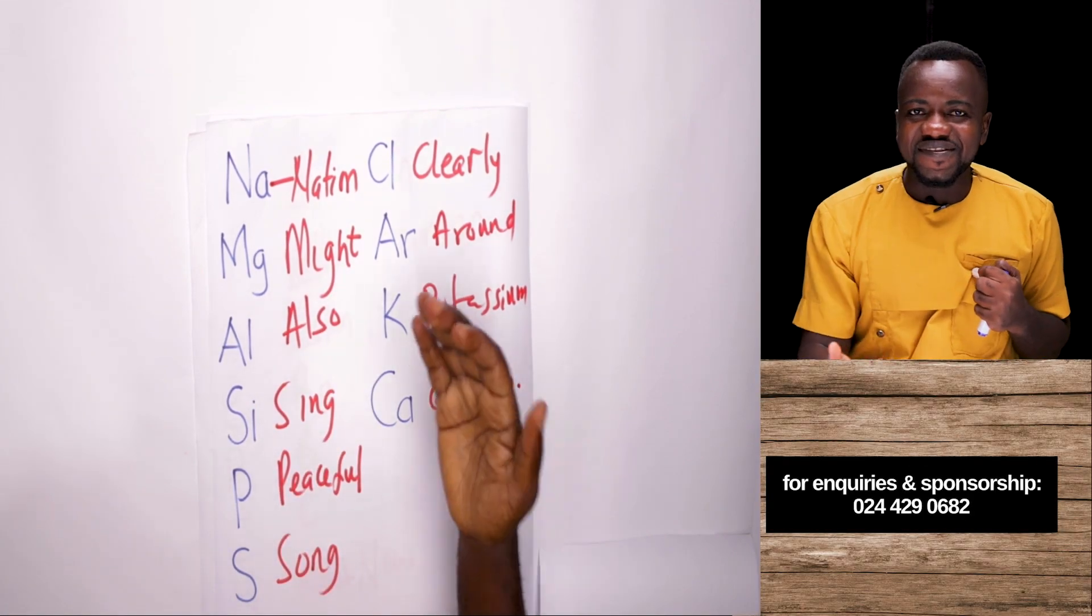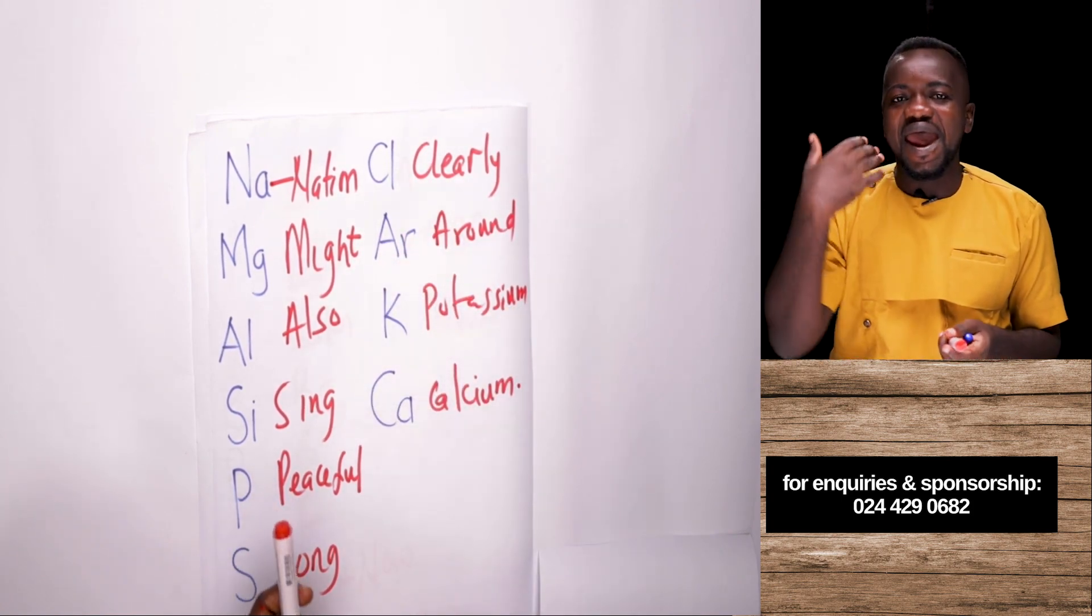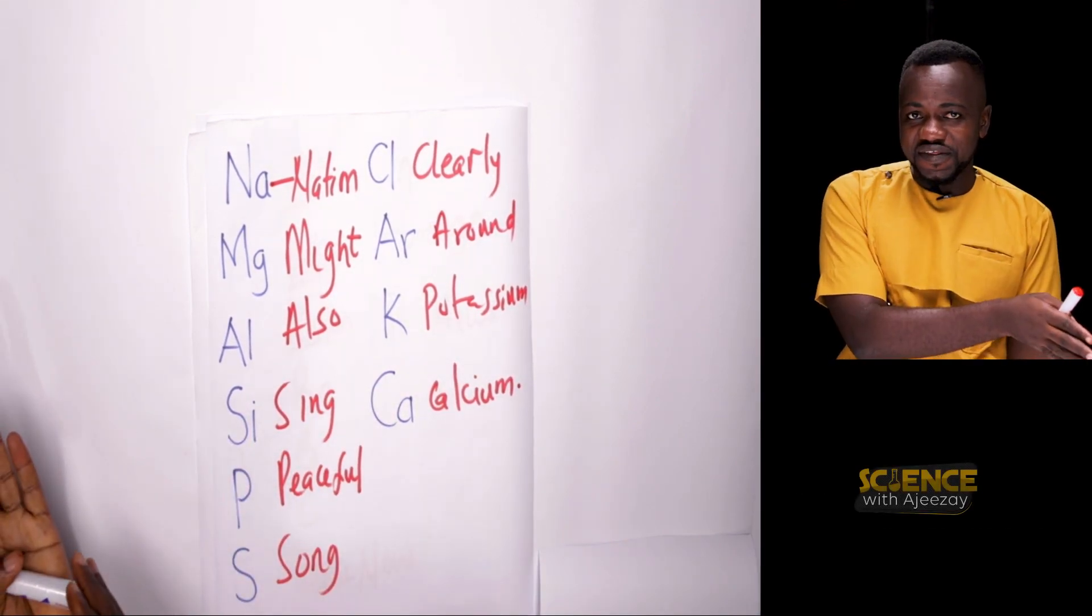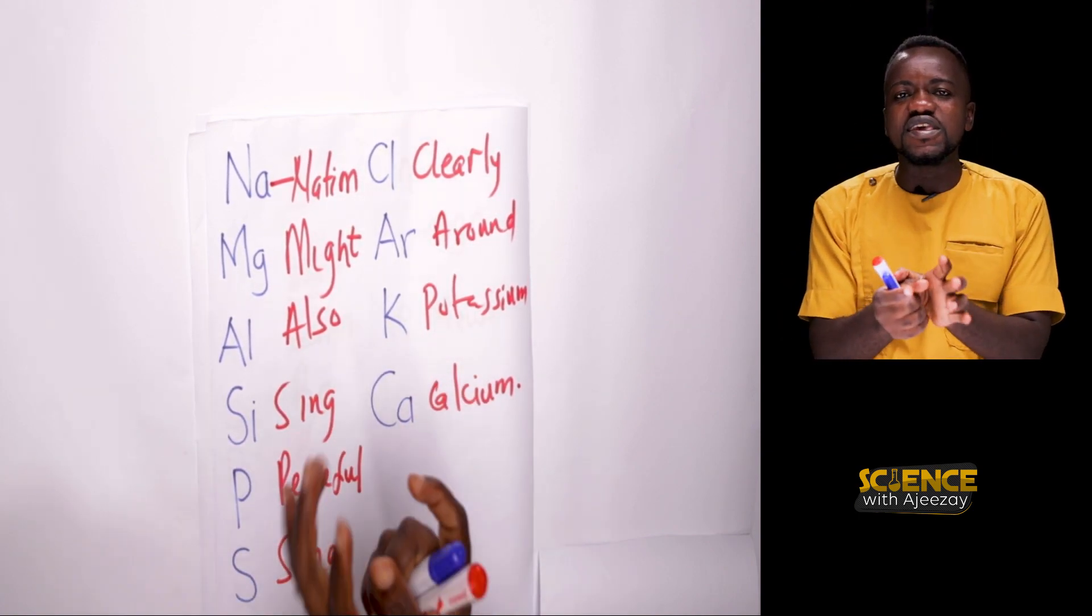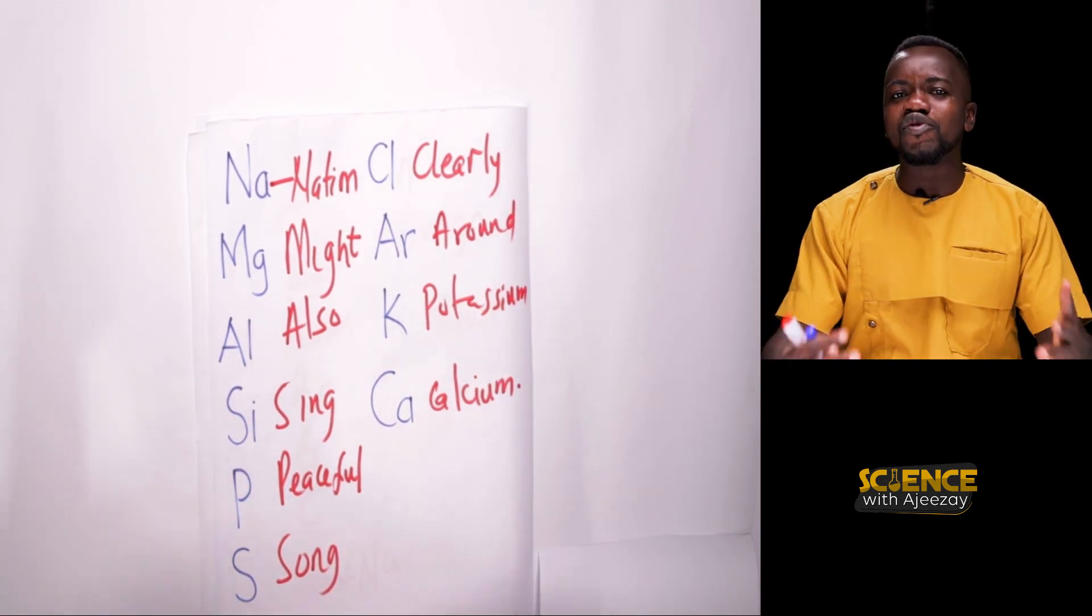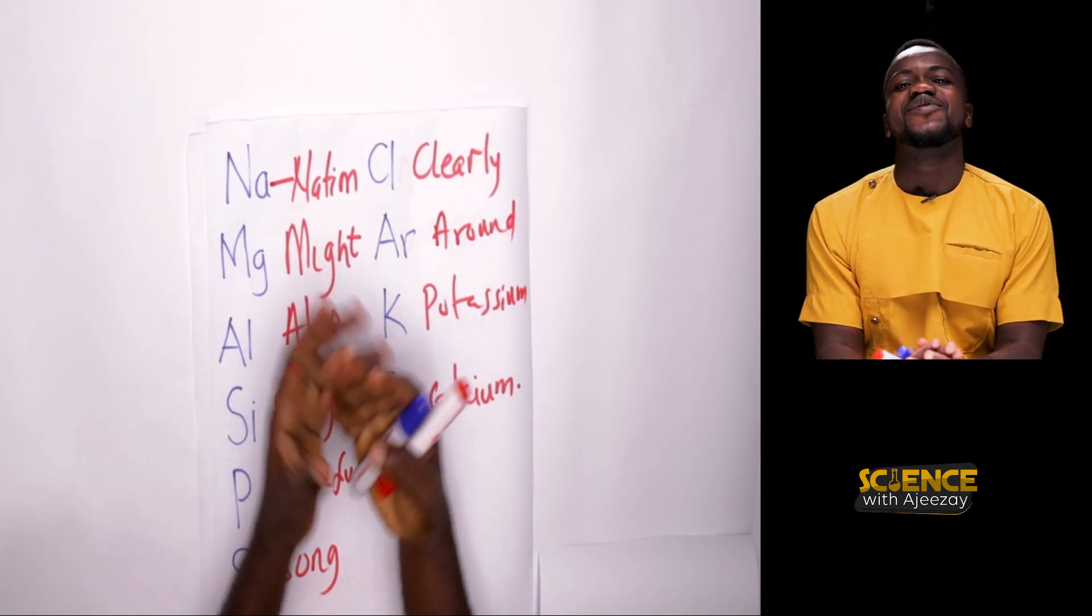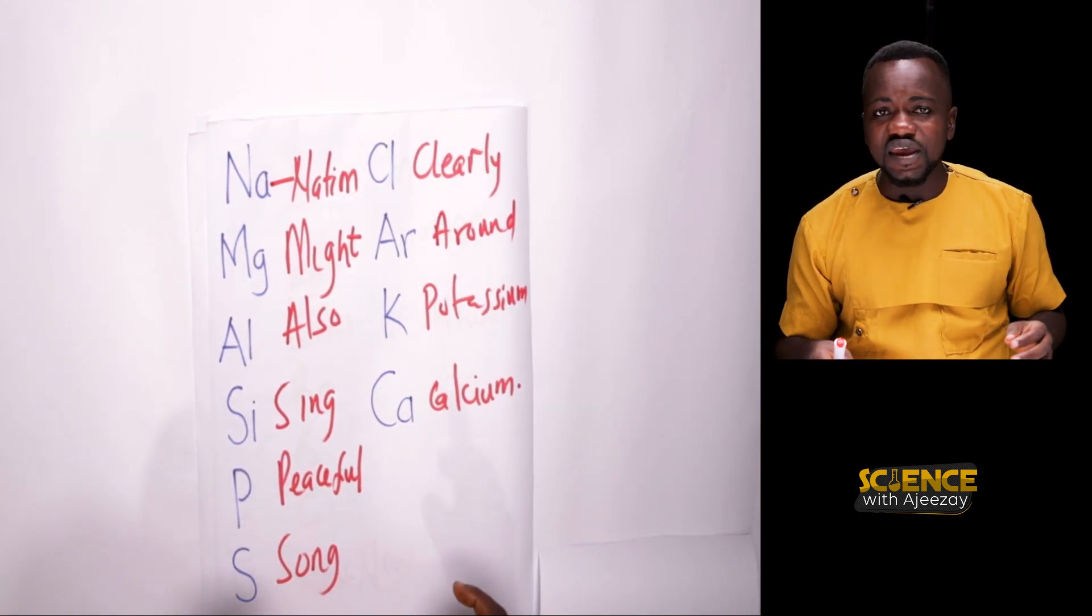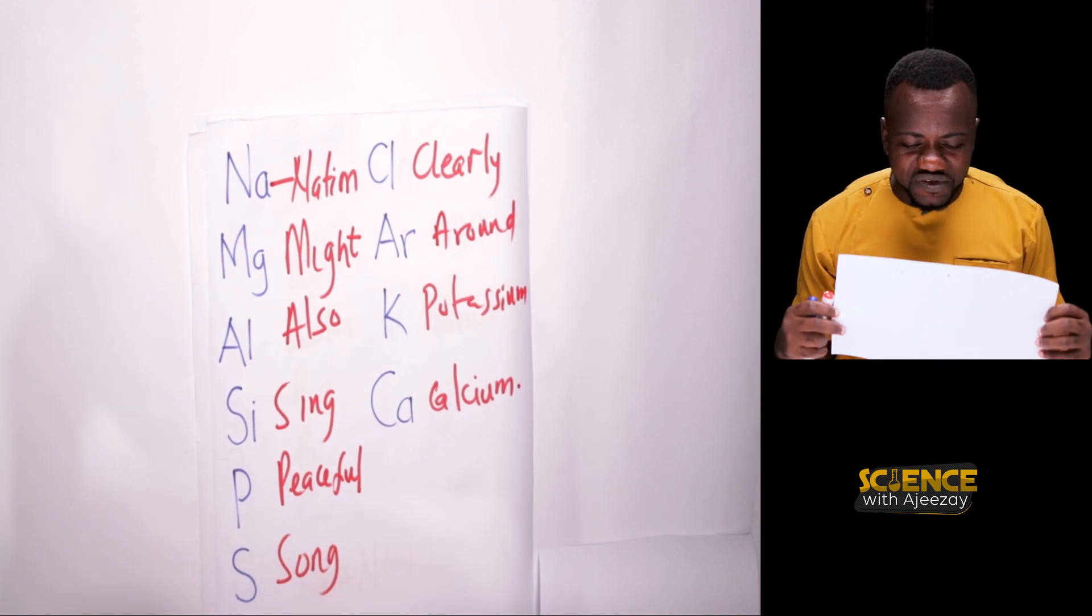Nations might also sing peaceful songs clearly around potassium and calcium. So this is the last ten and the first ten. So hi, hello, listen, BBC, now on foreign news. Nations might also sing peaceful songs clearly around potassium and calcium. This will help you remember the first 20 elements.